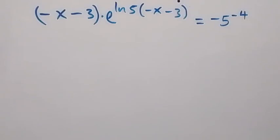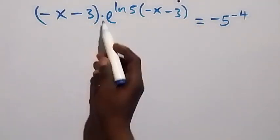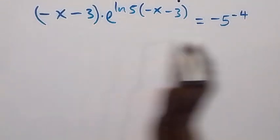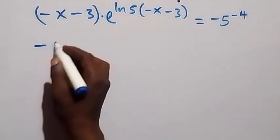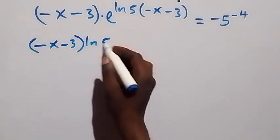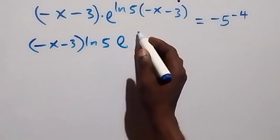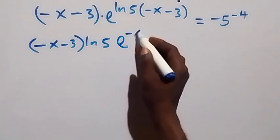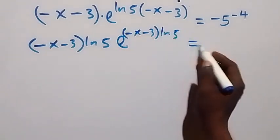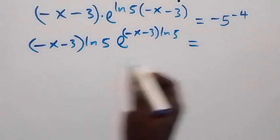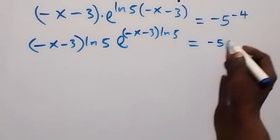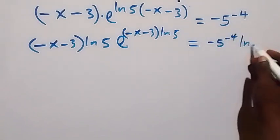Since the whole of this power must match with the coefficient, we need to multiply also by ln 5 on both sides. So we now have minus x minus 3 multiplied by ln 5, then we write that exponent minus x minus 3 times ln 5 equals to, since we multiply by ln 5 here, we also multiply by ln 5 on the right, giving minus 5 raised to power minus 4, multiplied by ln 5.